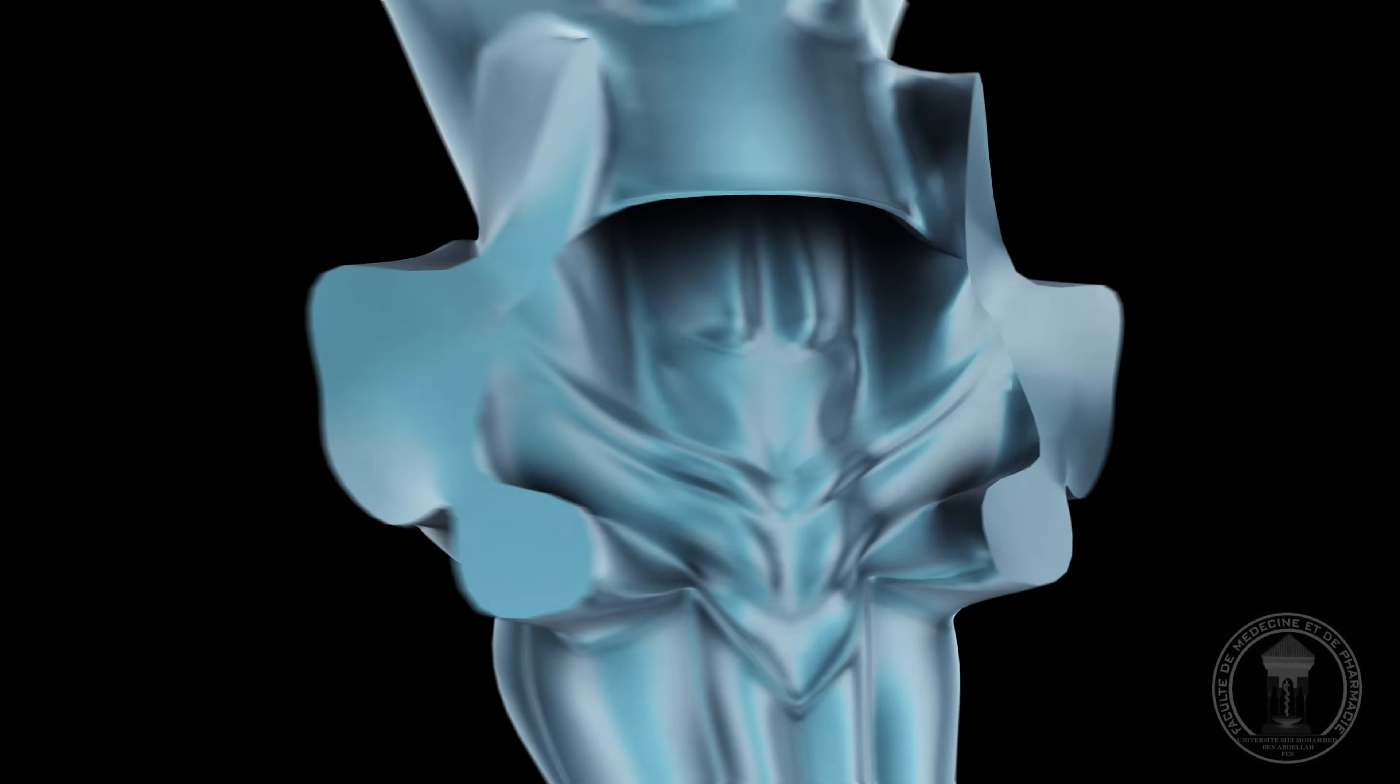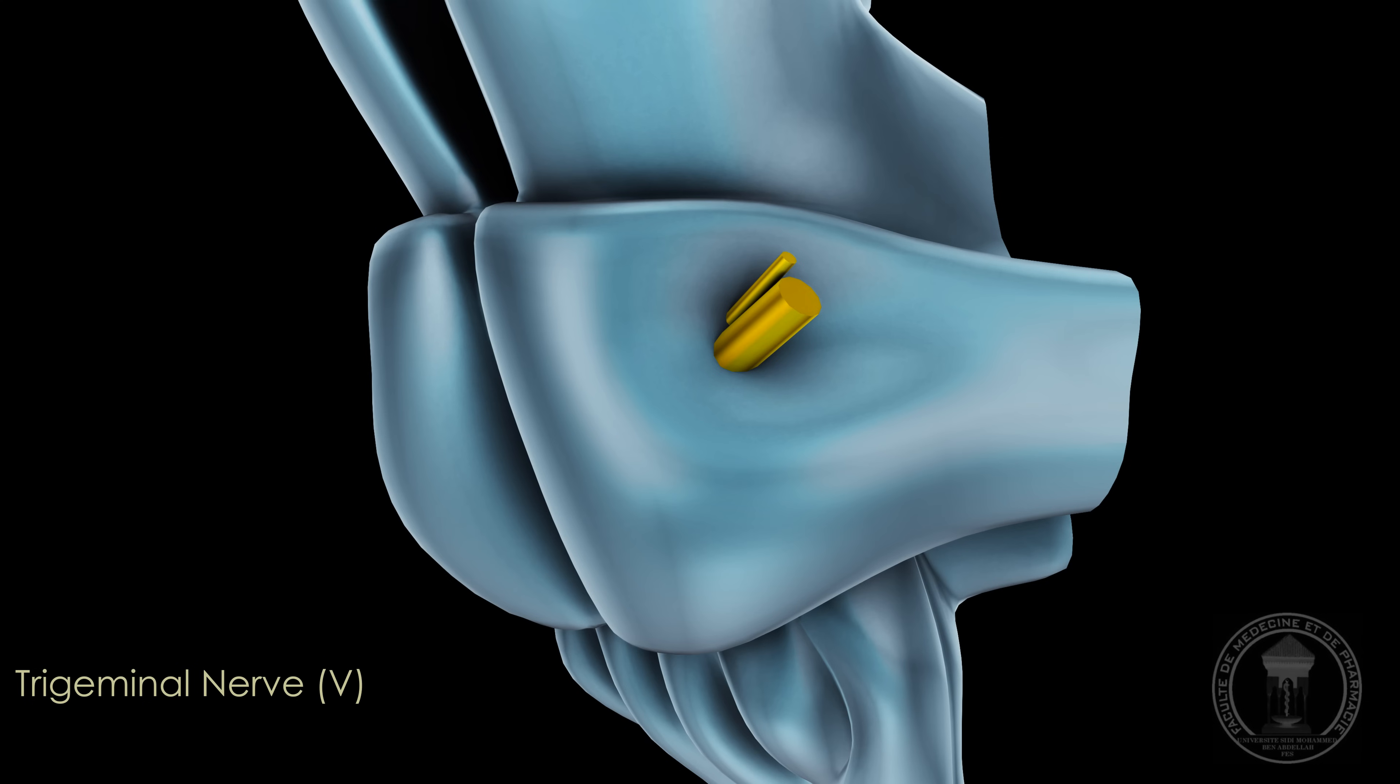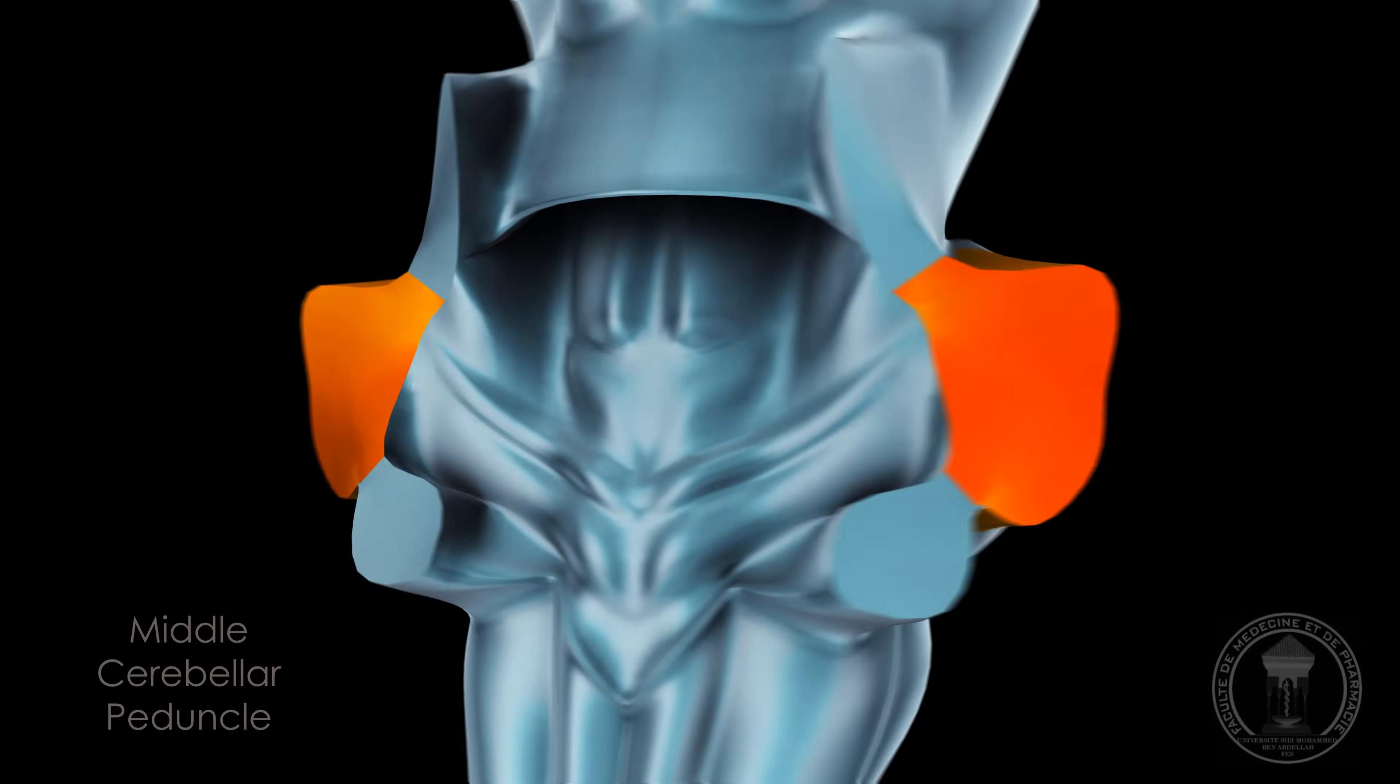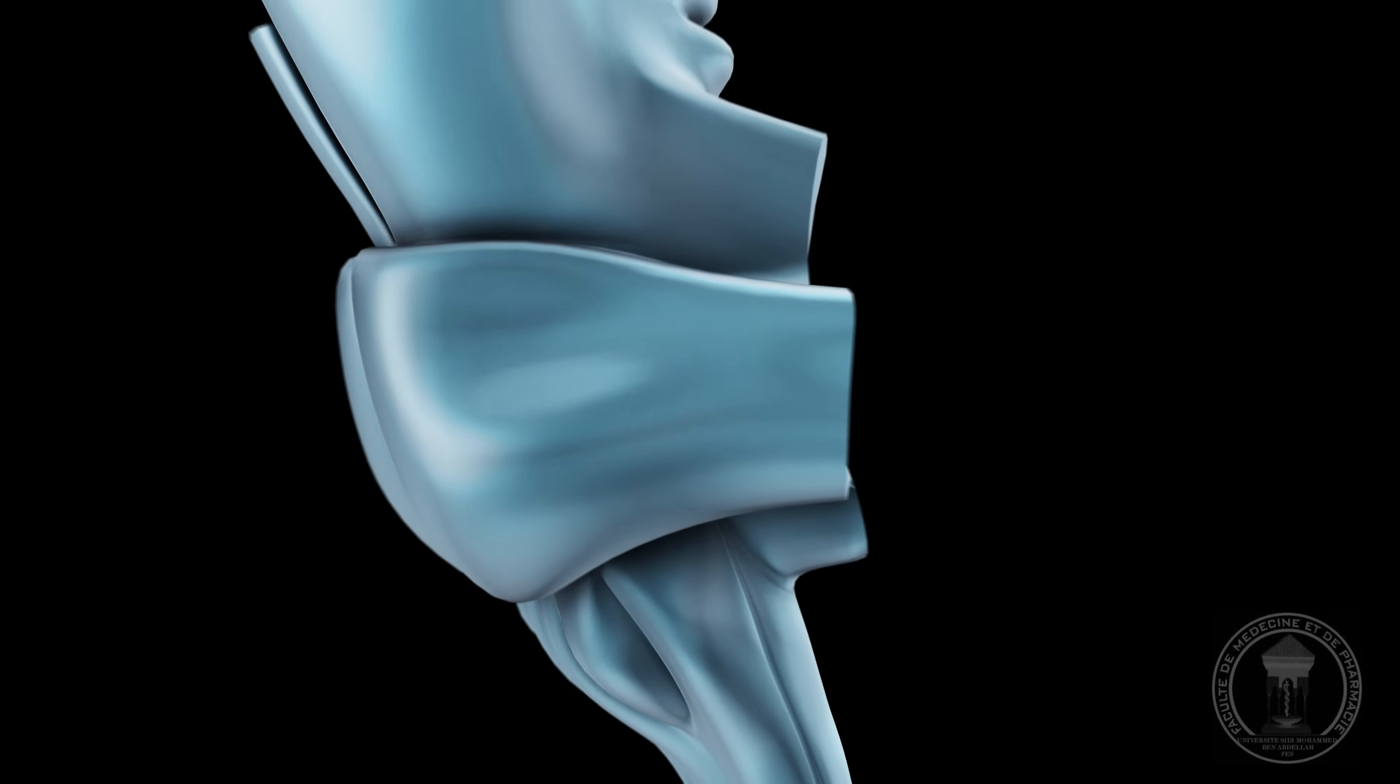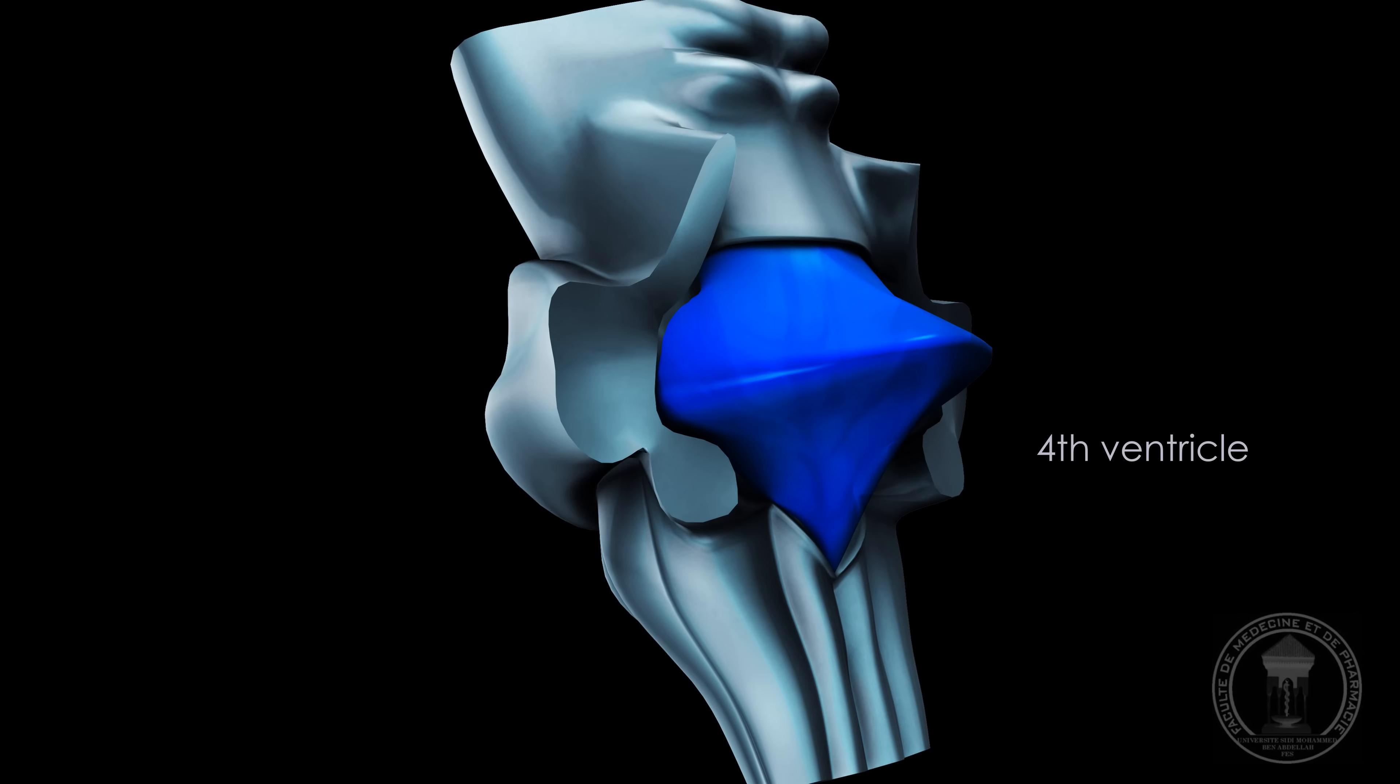It also contributes to autonomous functions and facial sensitivity. It contains the core and the emergence of the trigeminal nerve. The pons is connected to the cerebellum by the middle cerebellar peduncle and delimits the front face of the fourth ventricle.